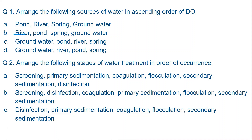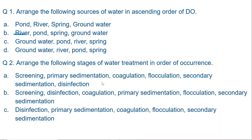Answer to question one is C. Question two: Arrange the following stages of water treatment in order of occurrence. We know the first process is always screening. So either option A or B is correct because the first process is listed as screening. The second process is always primary sedimentation. In one option it shows screening and disinfection, so that is not correct. Option A is the correct option: screening, primary sedimentation, coagulation, flocculation, secondary sedimentation, and disinfection.